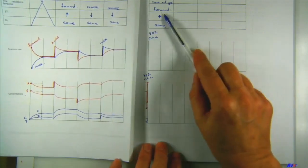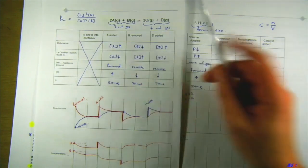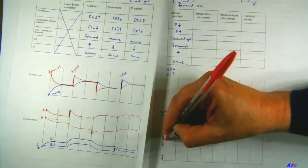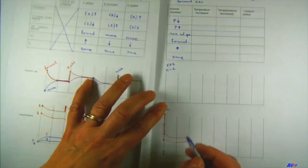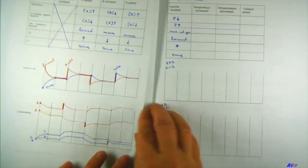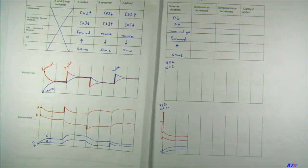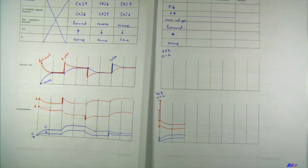Now the system reacts by favoring the forward reaction. So A and B decrease further — going a little bit down — and C and D increase, going a little bit up. Remember: bigger gradient first, then smaller gradient as they approach the new equilibrium with constant concentrations.